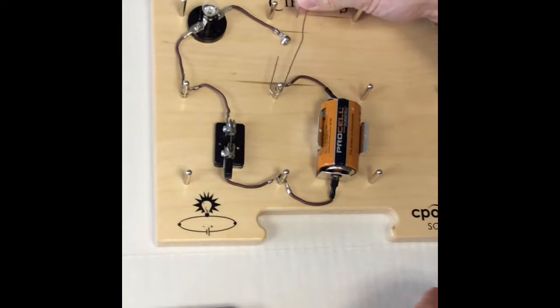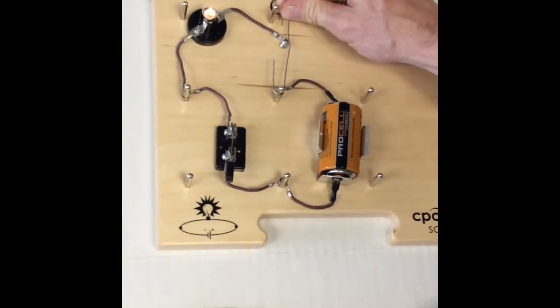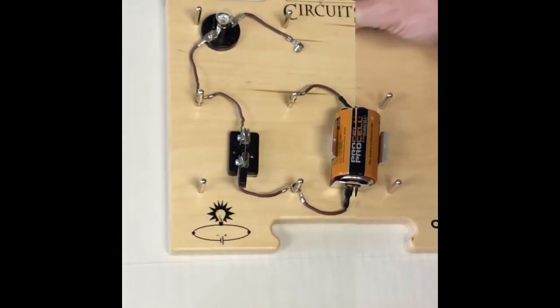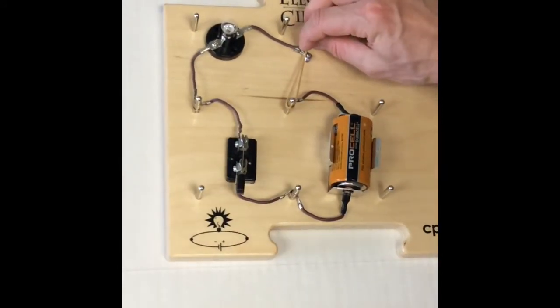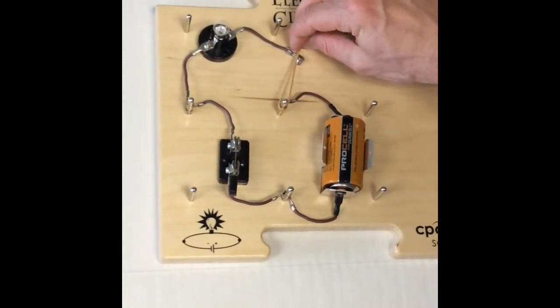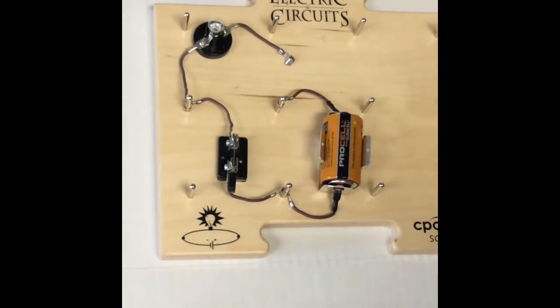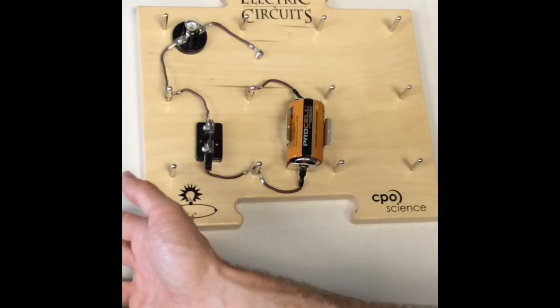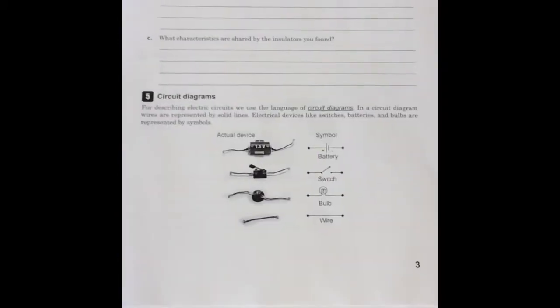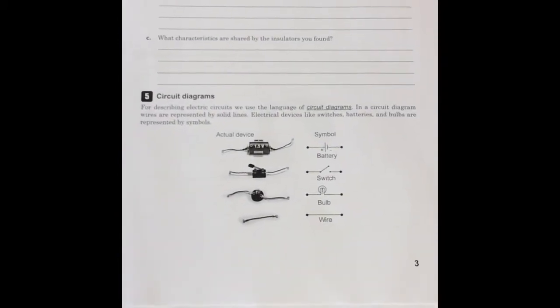Pen cap. Again, touching metal to metal, but here you can see no light. Here's our paper clip. We're going to go metal to metal. Ooh. And lastly, we're going to take our rubber band post to metal. And again, you can see that result. As a reminder, if it's a conductor, electricity flows and that light bulb lights.